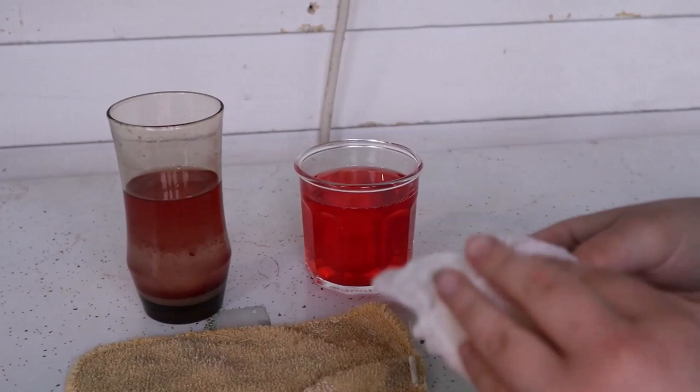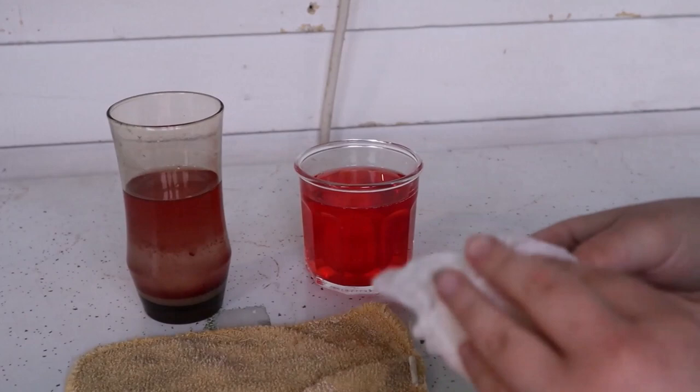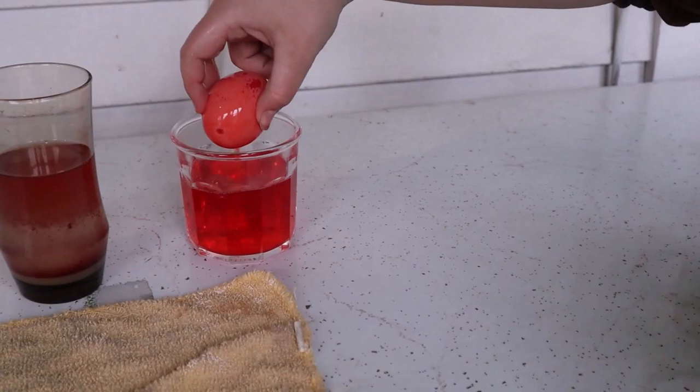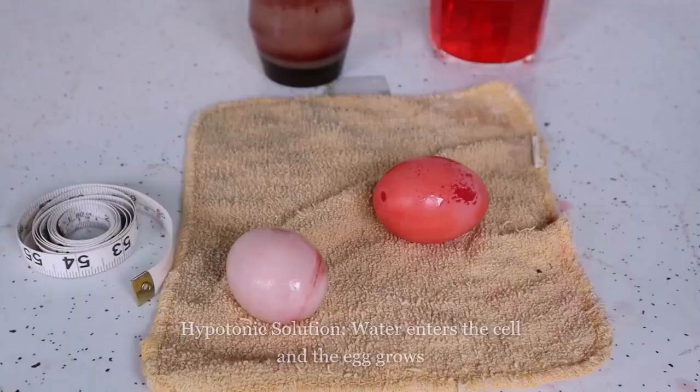When you remove the eggs from the solution, measure them again. Did they grow, stay the same, or shrink? If water entered the cell and the egg grew, then you placed it into a hypotonic solution.